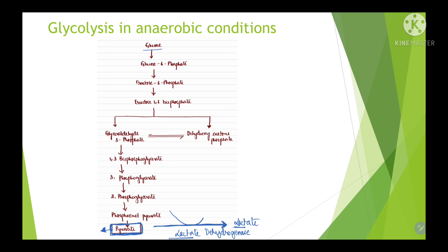This reaction requires energy, so there is utilization of one NADH molecule. This NADH molecule comes from step 6 of glycolysis, where a dehydrogenation reaction takes place in which glyceraldehyde-3-phosphate converts into 1,3-bisphosphoglycerate, producing one NADH molecule. This NADH gets utilized in the LDH reaction, and this whole pathway continues. In the absence of oxygen, this is how glycolysis occurs in anaerobic conditions, reutilizing the NADH produced in the lactate dehydrogenase reaction.